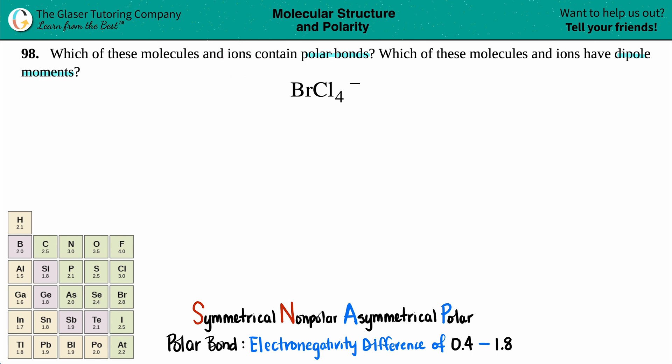The first question asks: does BrCl4 minus have polar bonds? The key here is they're looking for a specific bond. Bonds are what hold two elements together in a covalent compound, whether it's a double, triple, or single bond. But if I'm just looking at BrCl4 minus, do I see any bonds? I don't see them.